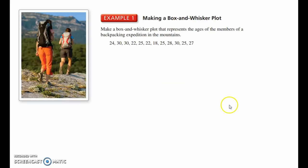All right, here's an example, making a Box and Whisker Plot. We're making one that represents the ages of members on a backpacking expedition to the mountains. First thing we have to do is order these from least to greatest. So, I have an 18-year-old on this trip, that's the one I'm going to list first, and then all the way up to 30 years old. Now, first thing, after I've ordered it, I want to check to see where's the median.